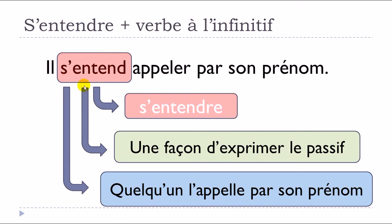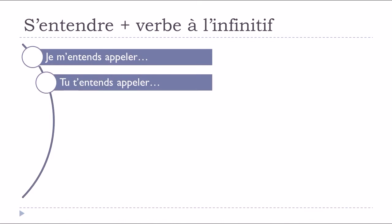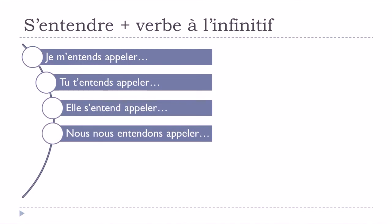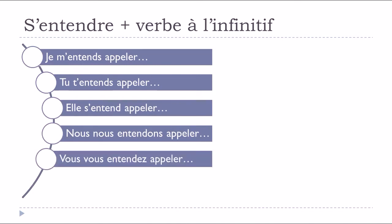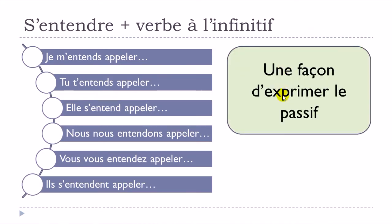So you use s'entendre and then after that you put the verb at the infinitive form: il s'entend appeler par son prénom. Let's see how to conjugate that at the present form: je m'entends appeler, tu t'entends appeler, elle s'entend appeler, nous nous entendons appeler, vous vous entendez appeler, ils s'entendent appeler.